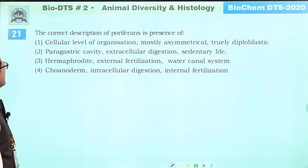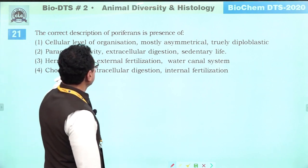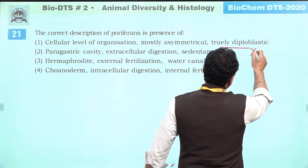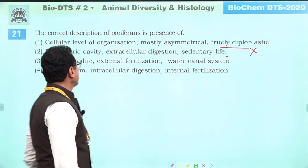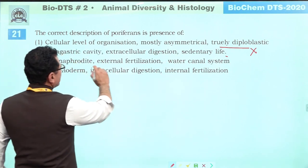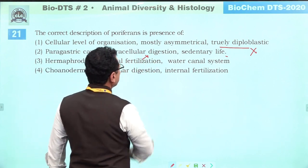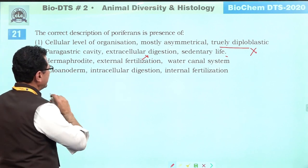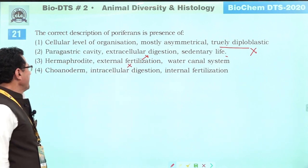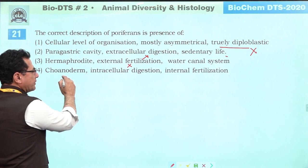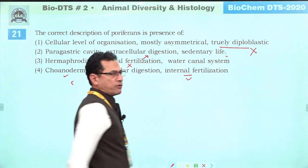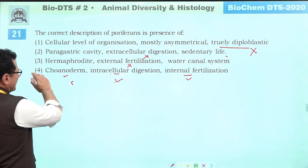The correct description of porifera includes: cellular level of organization — yes; mostly asymmetrical — yes; not truly diploblastic (single layer organism) — so diploblastic is wrong; paragastric cavity — yes; intracellular digestion — yes; hermaphrodite (gametes produced in one body) — yes; fertilization is internal — correct (gametes are transferred from one sponge to another). Also has choanoderm as inner body layer. So the correct answer is four.